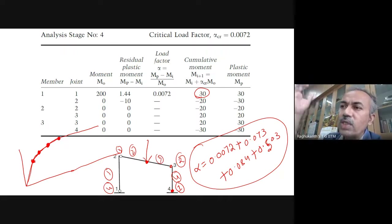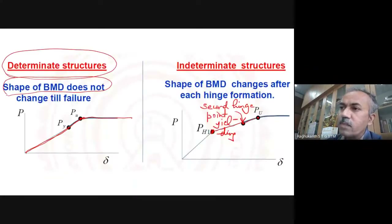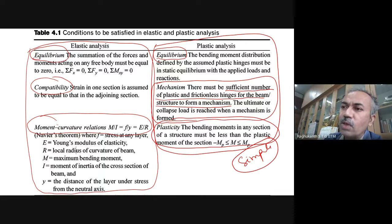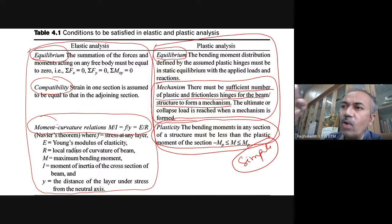This method is widely used. When you have two-story or three-story buildings with many plastic hinges, people use this incremental method. Apart from this, if you want to do a quick manual analysis for simple problems — beams, simple portal frames — other methods are also available.